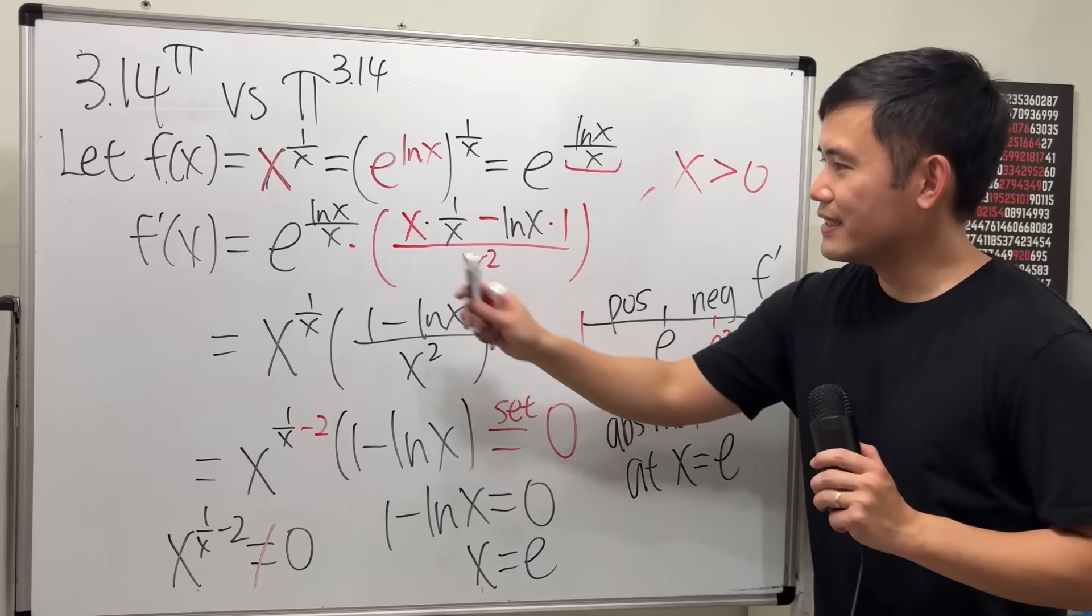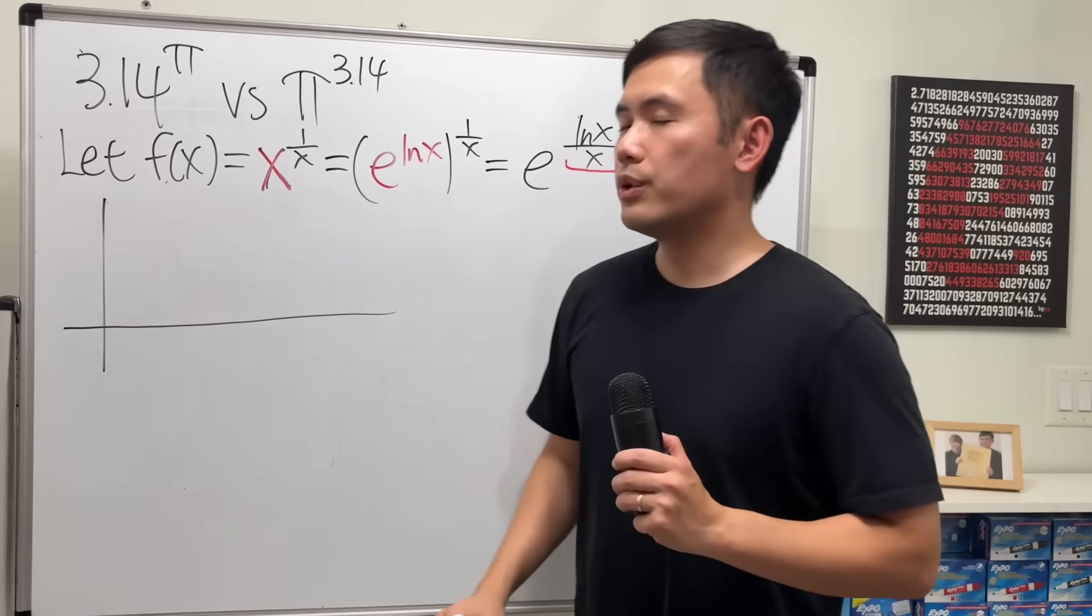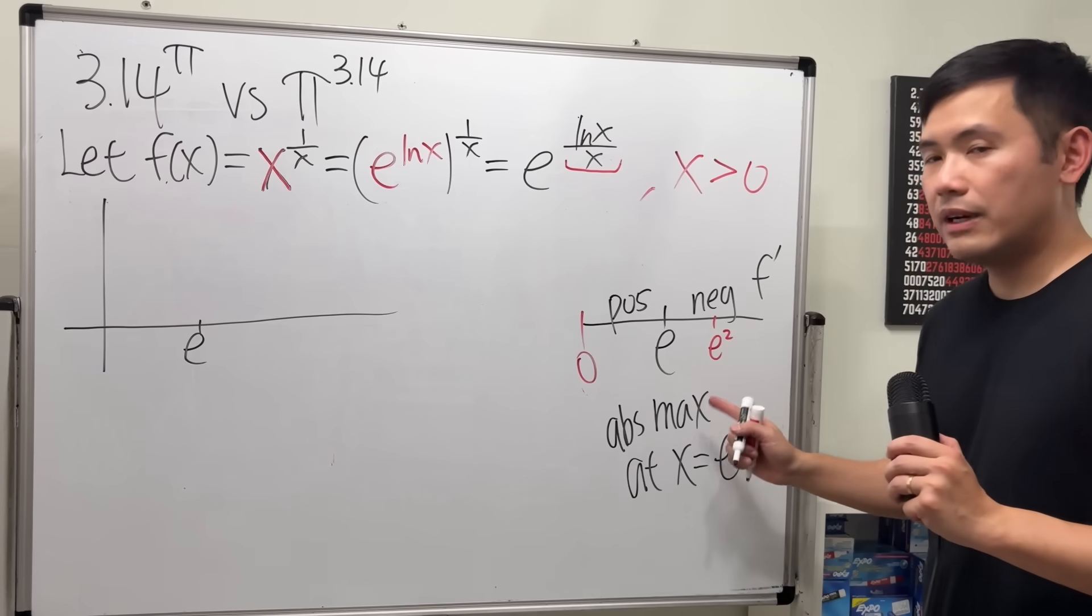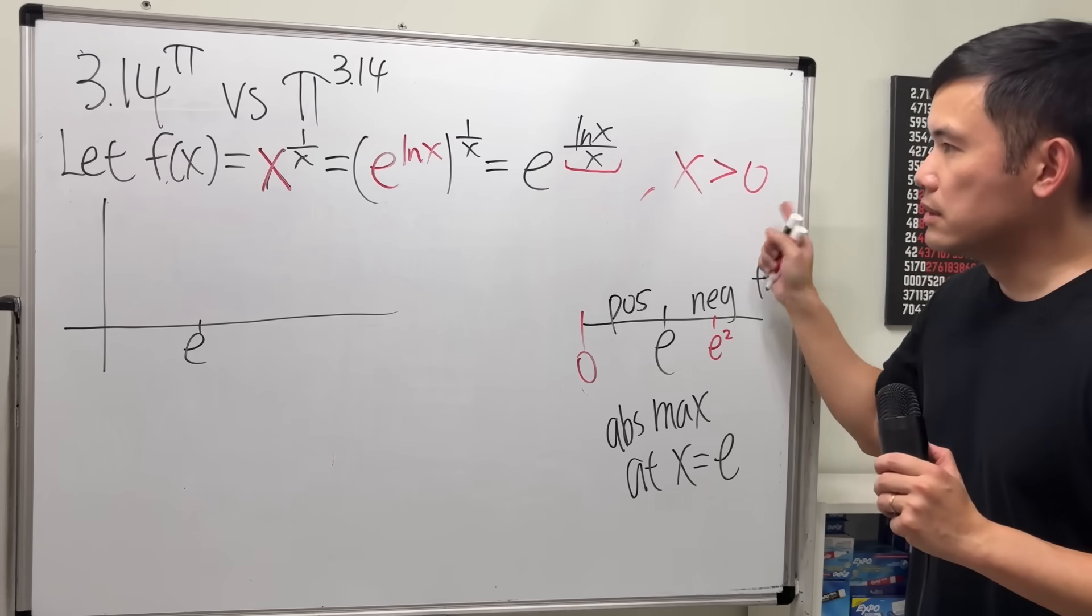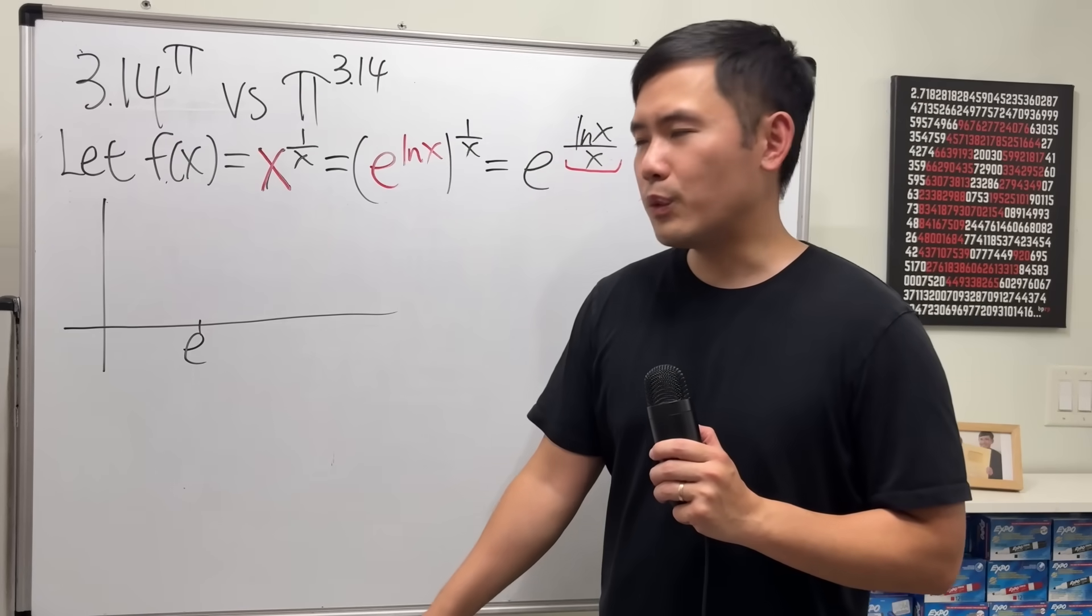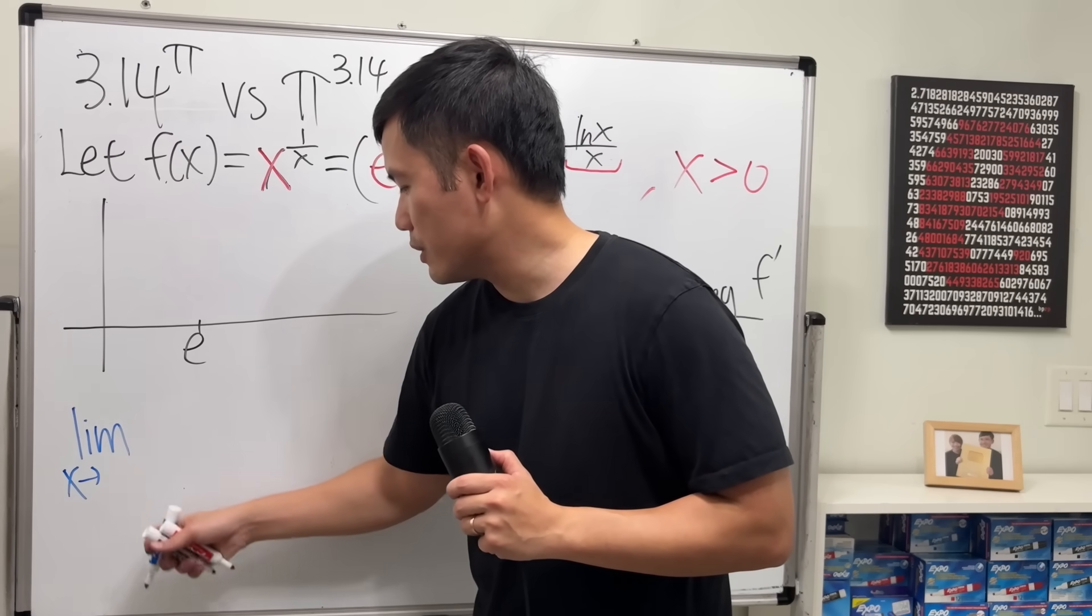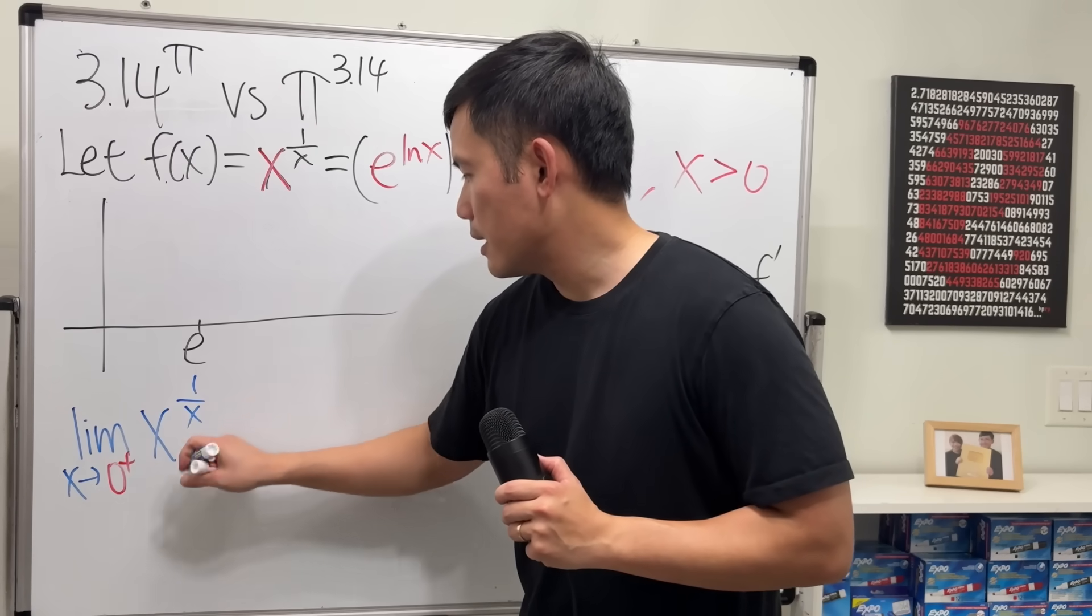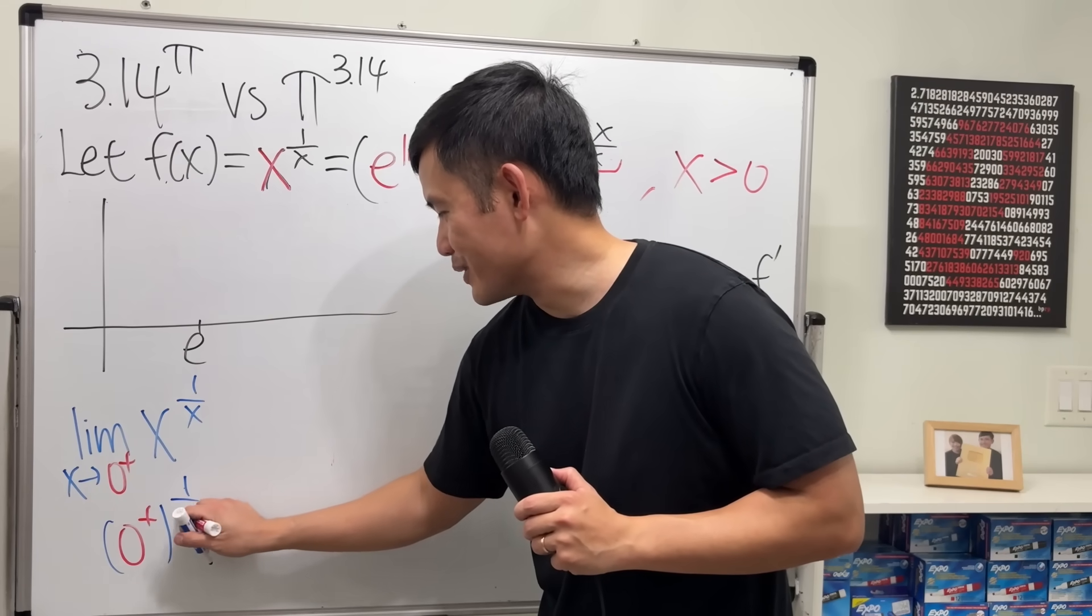So, now let's go ahead and finish this. Now, to make this clear for you guys, let me give you the graph for x to the 1 over x power. And we know that we have an absolute maximum at x equals e. And we just care about when x is greater than 0. But what if x is exactly 0? It's undefined. But we still want to have a nice graph right here, right? So, let's talk about the limit as x is approaching 0 from the right-hand side.